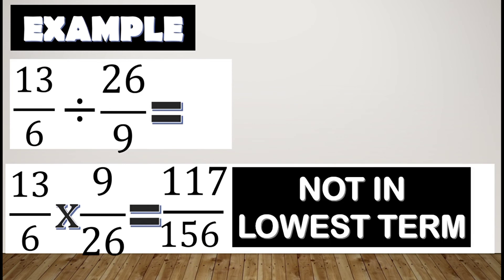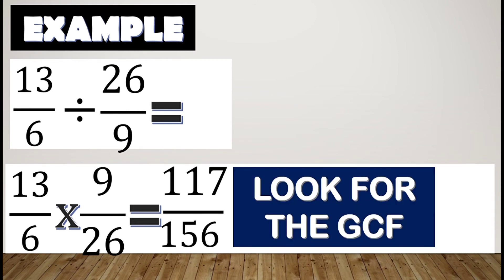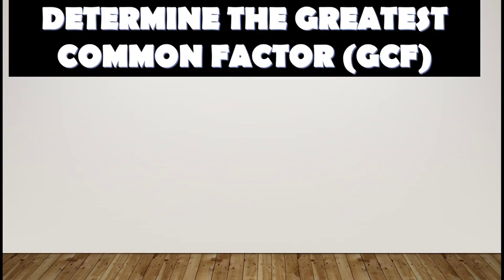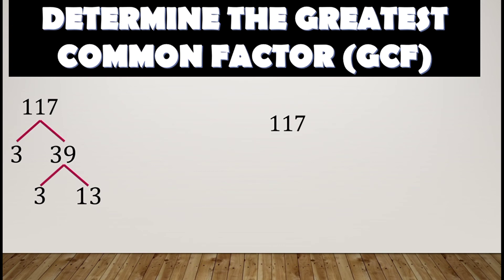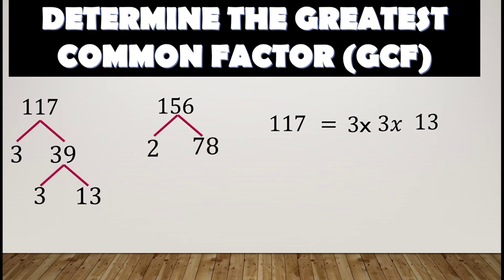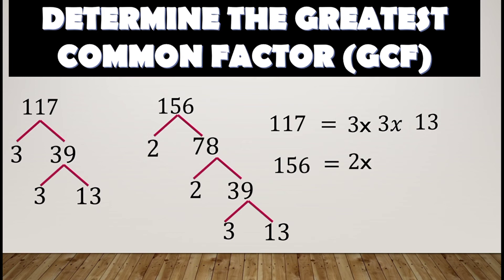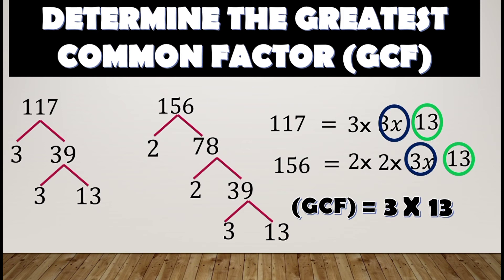This fraction is not yet written in lowest term, so we look for the greatest common factor. Using prime factorization: one hundred seventeen has prime factors three times three times thirteen. One hundred fifty-six has prime factors two times two times three times thirteen. The greatest common factor between these two terms is three times thirteen, which equals thirty-nine.